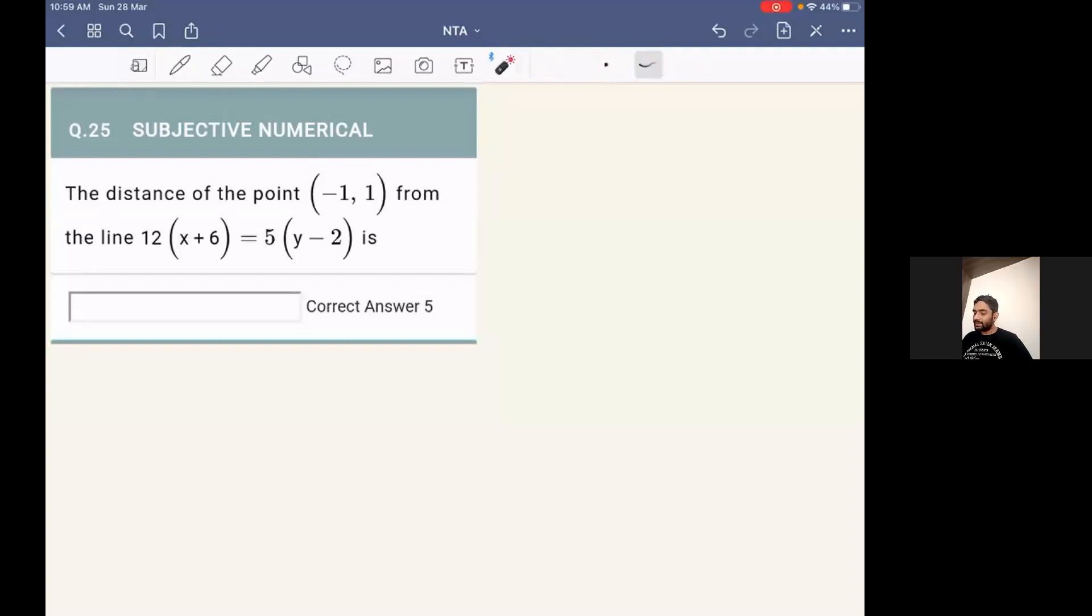The question is: the distance of the point (-1, 1) from the line that is given as 12 times x plus 6 equal to 5 times y plus 2 is. So this question is a very straightforward easy question based on finding out distance between a point and a line.